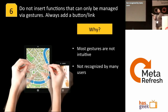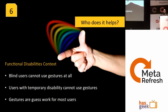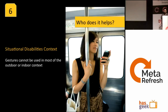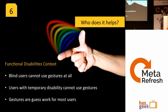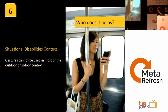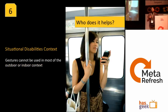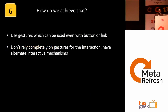Blind users can't see or use gestures — they depend on screen readers. Who does this help? Blind users, people with temporary disabilities like fractures who can't use both hands, and people in situational contexts — outdoors, busy, unable to use both hands or understand the gestures. The solution is having buttons and text as alternatives and not relying completely on gestures.